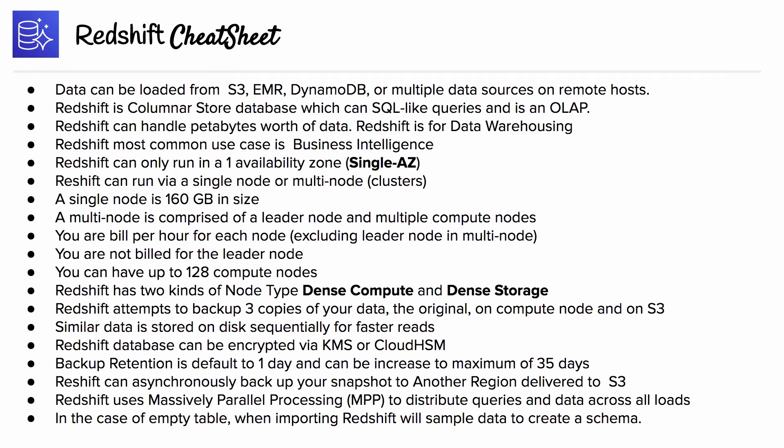Just to wrap everything up, we have a really good Redshift cheat sheet here — definitely recommend you print this out for your exam. We're going to go through everything again. Data can be loaded from S3, DynamoDB, or multiple data sources on remote hosts. Redshift is a columnar store database which can give you SQL-like queries and is an OLAP system. Redshift can handle petabytes worth of data and is used for data warehousing.